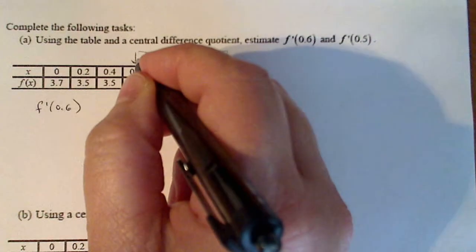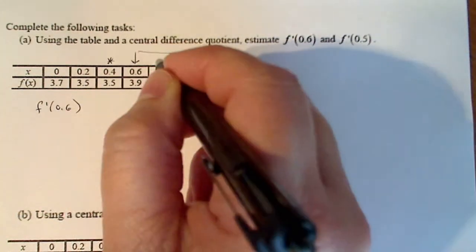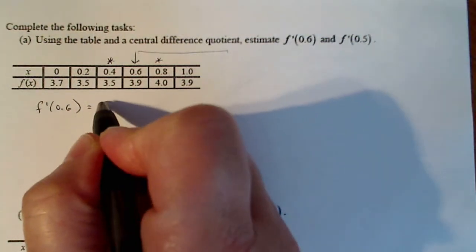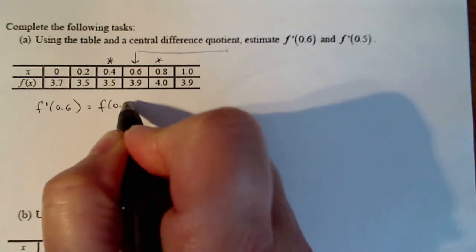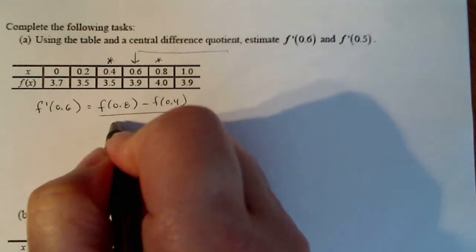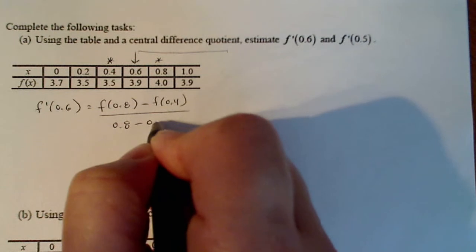Let's start with f prime of 0.6. Now I see 0.6 is on the table, so I'm going to use these two points just on both sides so that 0.6 is in the center.